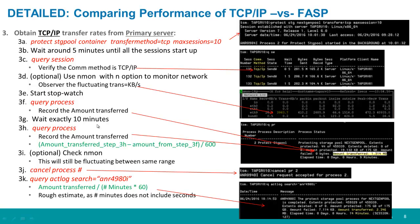Wait exactly 10 minutes and issue another query process. Record the second amount transferred. Then take the second recording, subtract the first recording from it — making sure you're comparing kilobytes to kilobytes or gigabytes to gigabytes — and divide by 600, which is 10 minutes times 60 seconds. That gives you your transfer rate for TCP/IP.